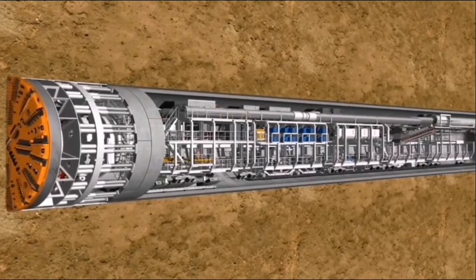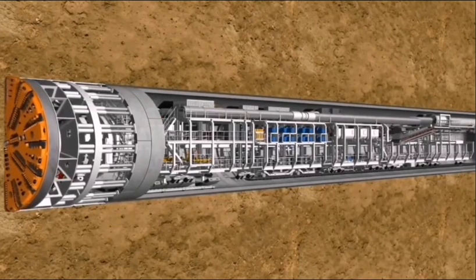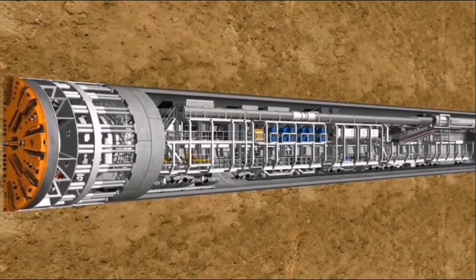The working method of an EPB shield is basically made up of two phases, the tunneling phase and the ring building phase.